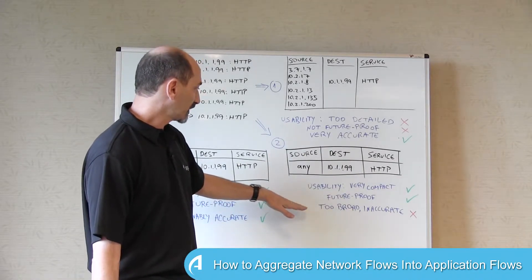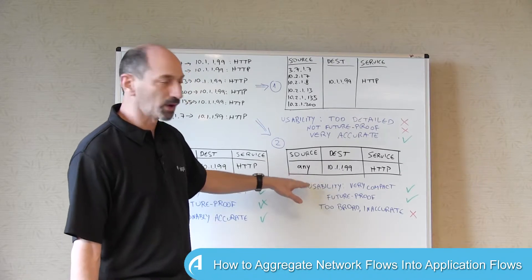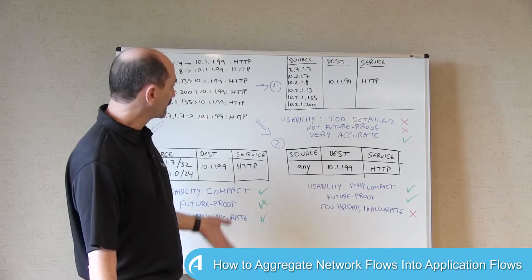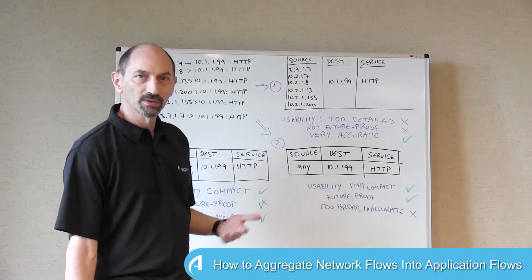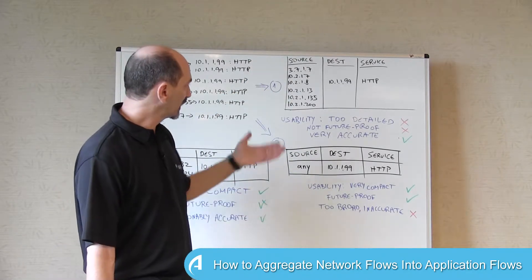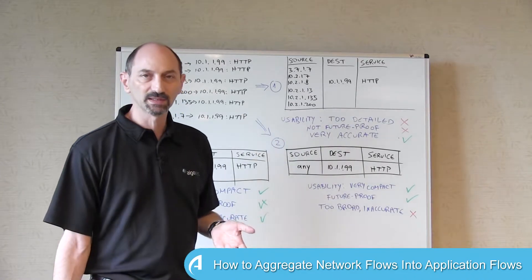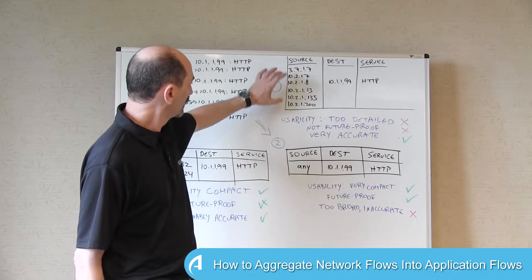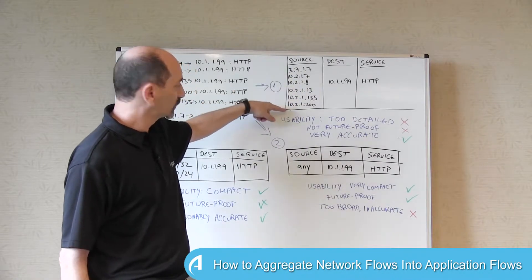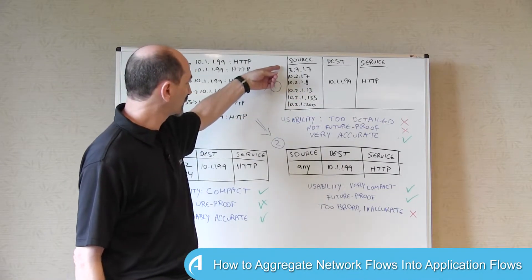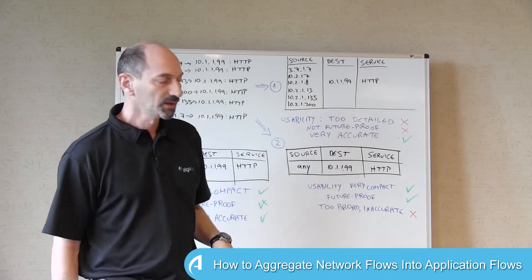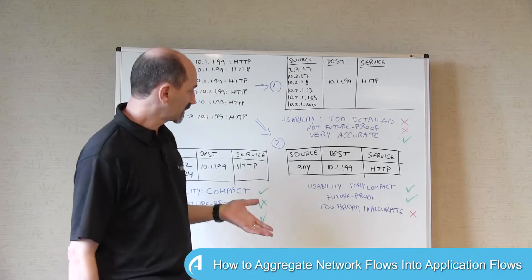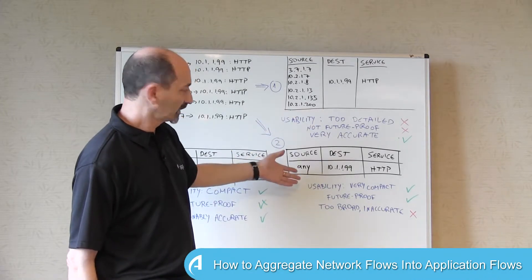So this is good. The downside is, of course, that it is too broad. This is very inaccurate. It's not that we saw every single IP address in the internet. And the IP addresses we did see are not uniformly distributed. They are quite focused. You can see that the 10.2 subnet is quite visible. And then we have this outlier in the 3.7 IP address, but it's still pretty focused. So we could do better than this as well.